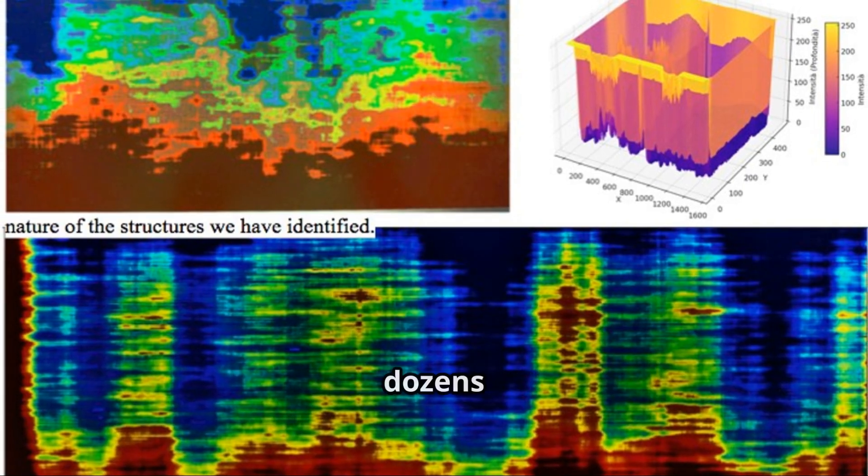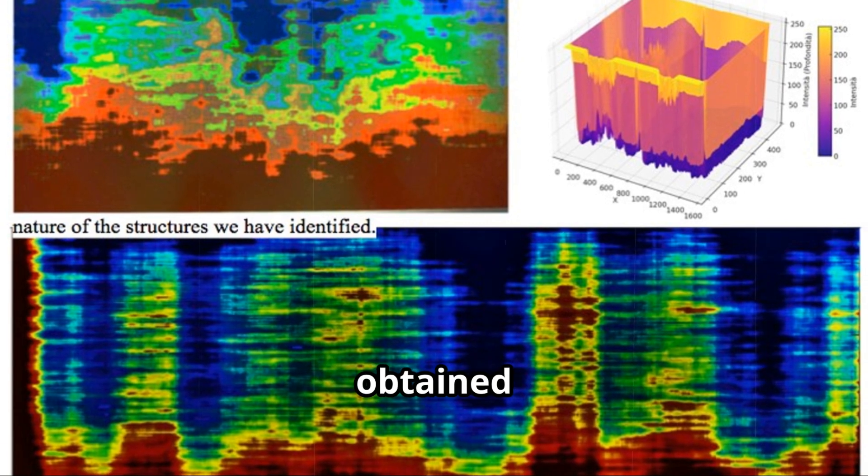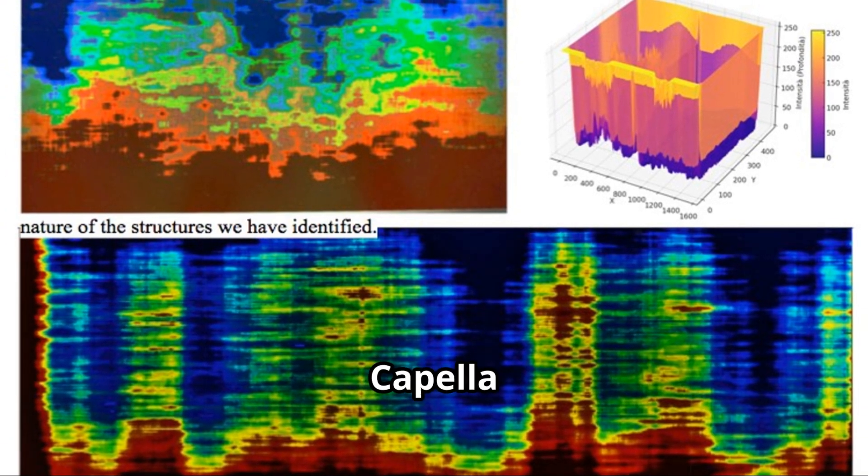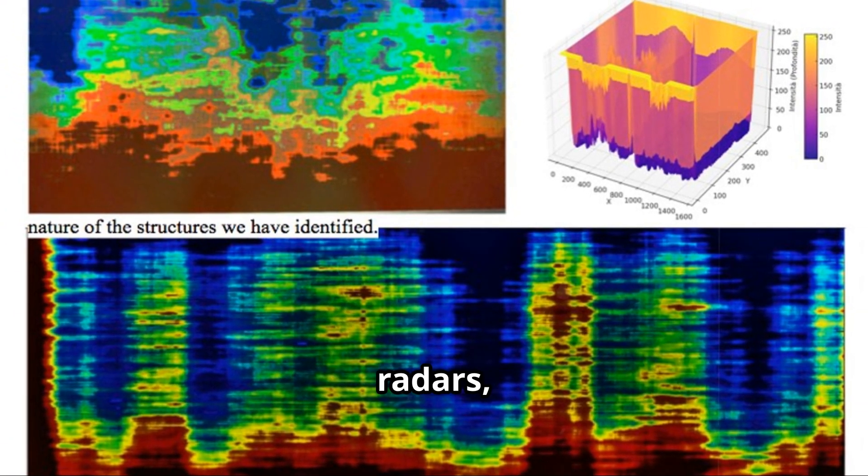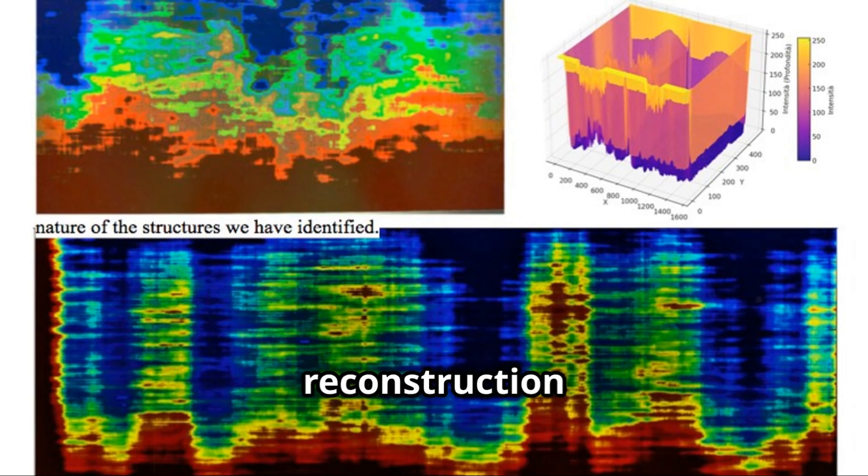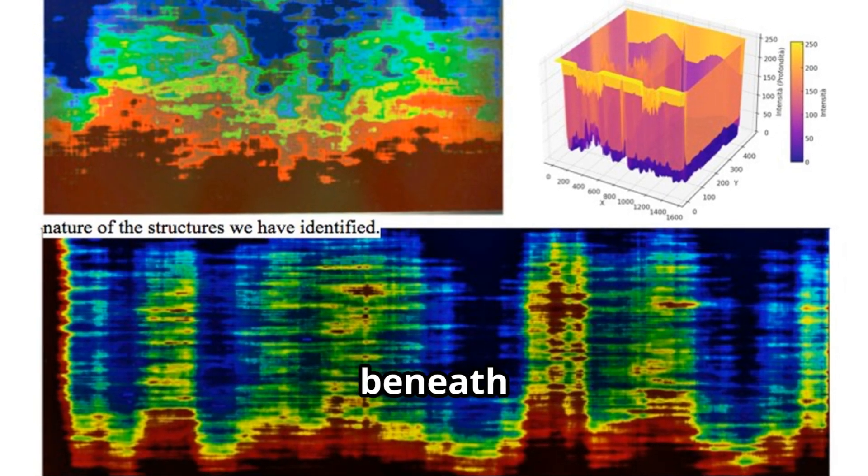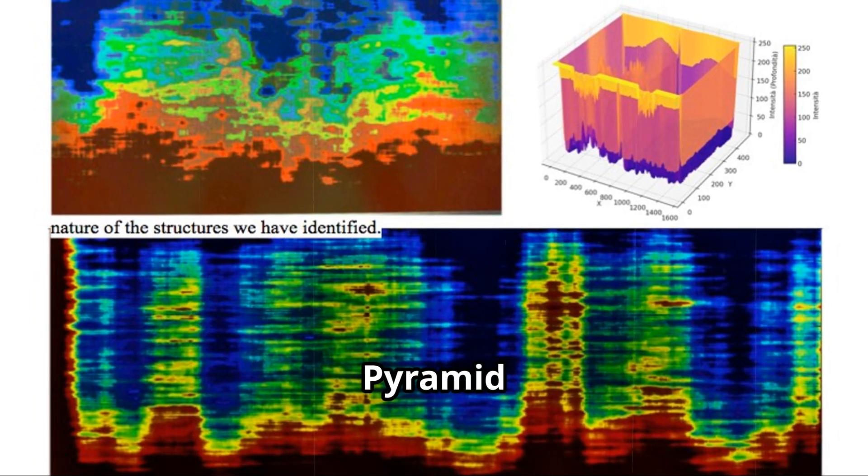The examination of dozens of tomographic images obtained from different angles using Capella Space and Umbra radars enabled a three-dimensional reconstruction of objects inside and beneath the middle pyramid known as the pyramid of Khafra.